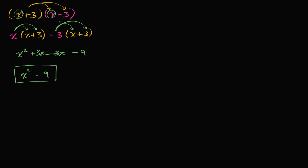We could try it out in general terms. Instead of x plus three times x minus three, let's say you have x plus a times x minus a. I encourage you to pause this video and work it all out — just assume a is some number like three or some other number — and apply the distributive property twice and see what you get.